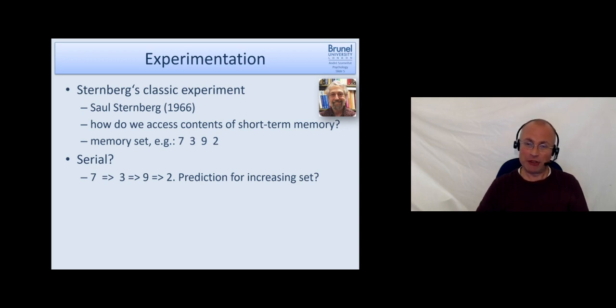What could be the prediction for an increasing set size? That means suppose participants press yes or no, yes it is in the set or no it's not in the set. Probably if you see only one number then you will be very very fast because it's very quick, you don't need to really search. However, what happens if you present two numbers or three numbers, four, five, six numbers?